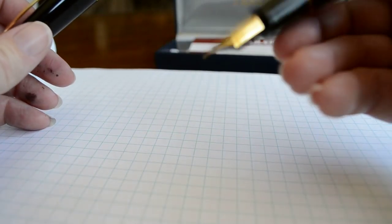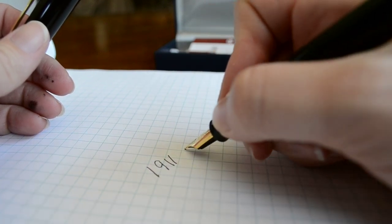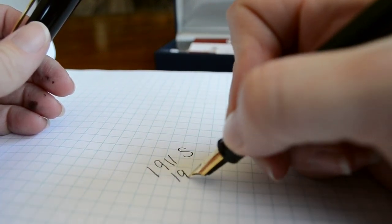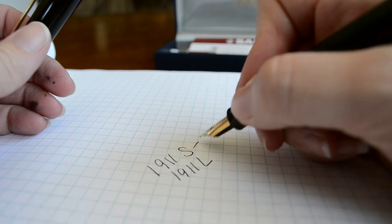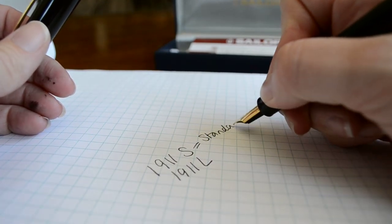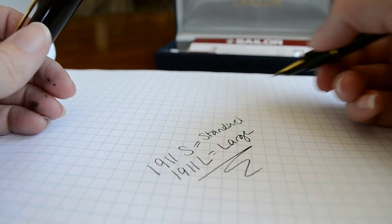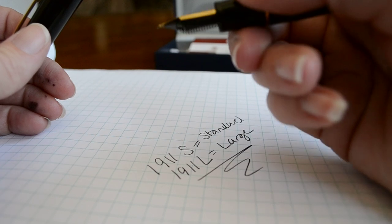As far as a writing sample, it does write extremely smooth. Let me just go ahead—it's actually the 1911 Large. I'm going to be testing the Sailor Standard next. That's the standard; this is the large. This is the one that I tested here.